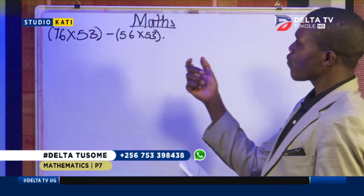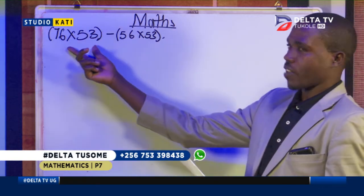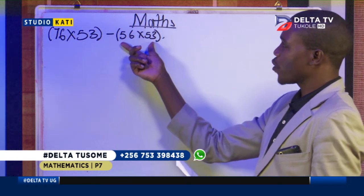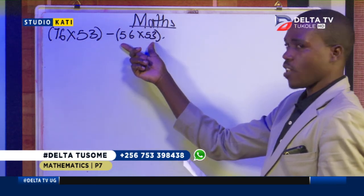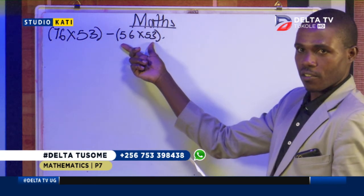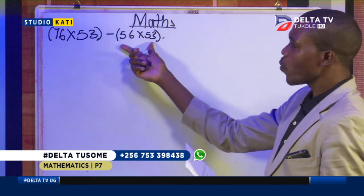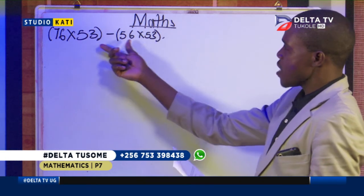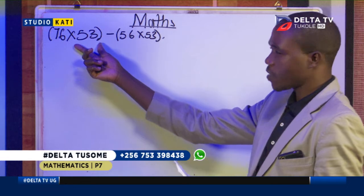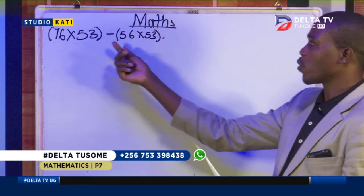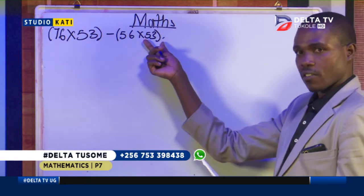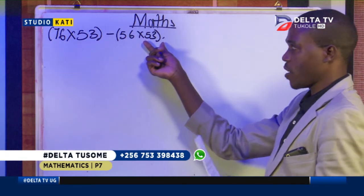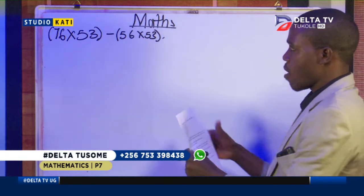We first of all analyze the two brackets. We look at the two brackets and see which number is found in every bracket. You will find that 53 is found in the first bracket and also in the second bracket. So it means that 53 is the common number used in the question. Write it.